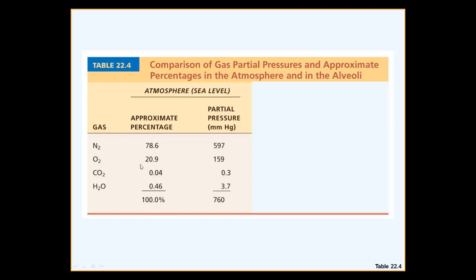The partial pressure of oxygen in the air is approximately 160 mmHg. Now consider a scenario: if someone is in an airplane and the pressure drops suddenly — because higher altitude means lower total pressure — and instead of 760 mmHg the total pressure becomes 500 mmHg, then if oxygen remains 20% of 500, the partial pressure of oxygen becomes only 100 mmHg. At a lower total pressure, even the same 20% percentage gives a much lower partial pressure of oxygen.